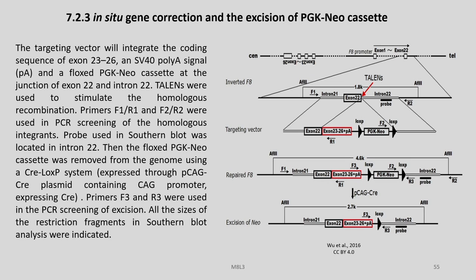The targeting vector integrates the coding sequence of exons 23 to 26, an SV40 polyA signal, and a floxed PGK neomycin cassette at the junction of exon 22 and intron 22. TALENs were used to stimulate homologous recombination; primers F1, R1, F2, and R2 were used in PCR screening. The probe used in Southern blot was located in intron 22, then the floxed PGK neomycin cassette was removed from the genome using a Cre-lox system. Primers F3 and R3 were used in the PCR screen of excision, and all restriction fragment sizes in Southern blot analysis are also shown.